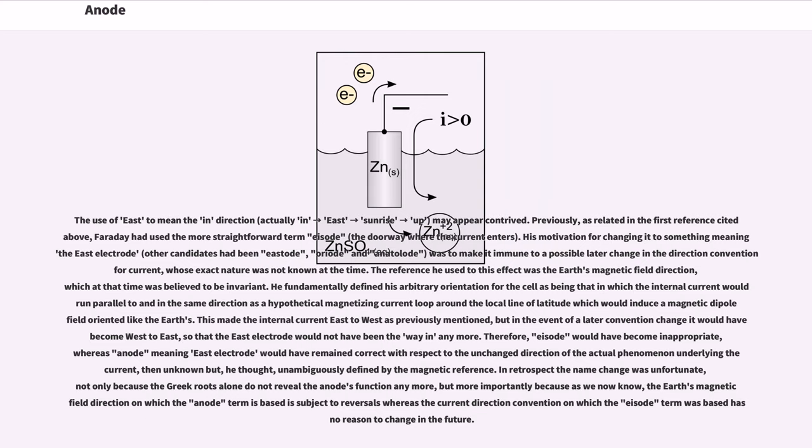He fundamentally defined his arbitrary orientation for the cell as being that in which the internal current would run parallel to and in the same direction as a hypothetical magnetizing current loop around the local line of latitude which would induce a magnetic dipole field oriented like the Earth's. This made the internal current east to west as previously mentioned, but in the event of a later convention change it would have become west to east, so that the east electrode would not have been the way in anymore. Therefore, eisode would have become inappropriate.